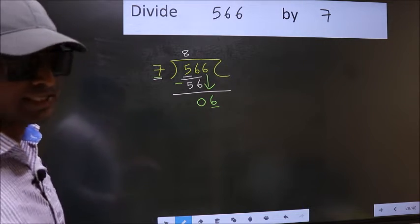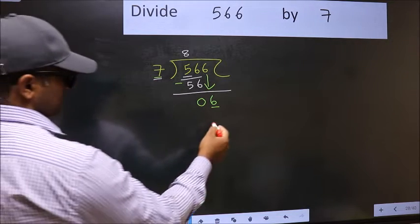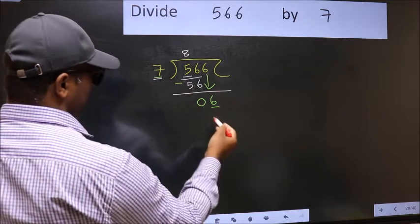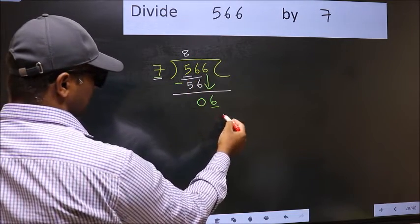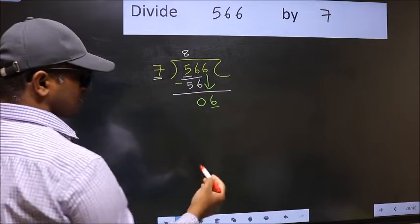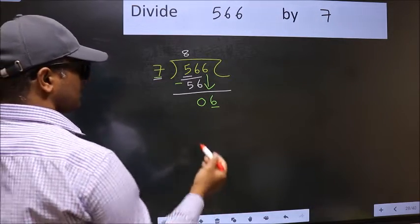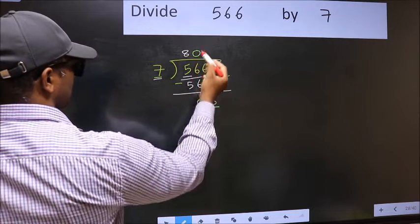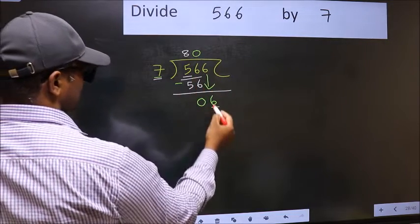Instead, what you should think of doing is what number should we take here. If I take 1, we will get 7. But 7 is larger than 6. So what we should do is we should take 0. So 7 into 0, 0.